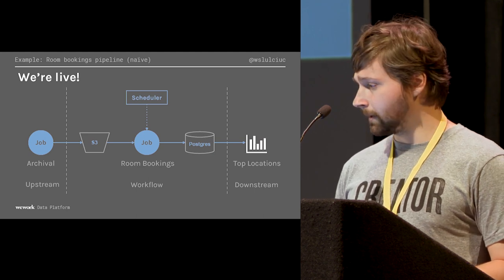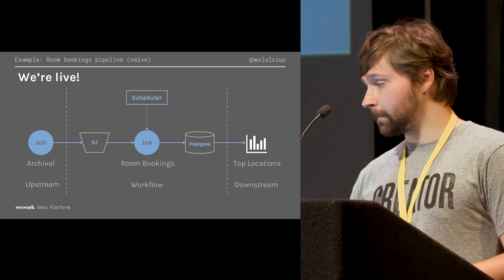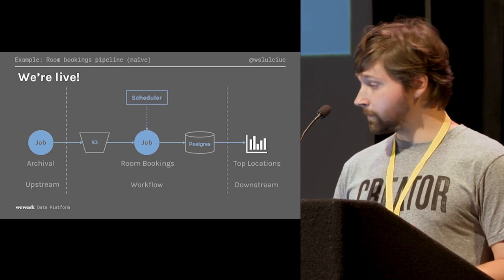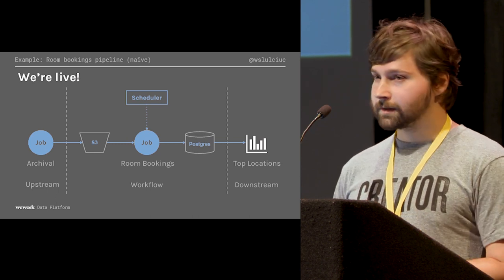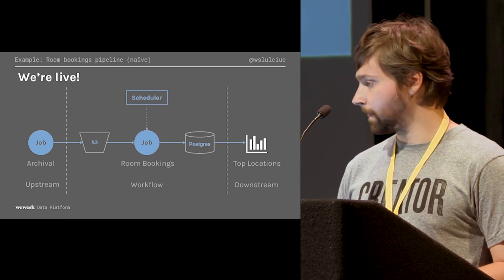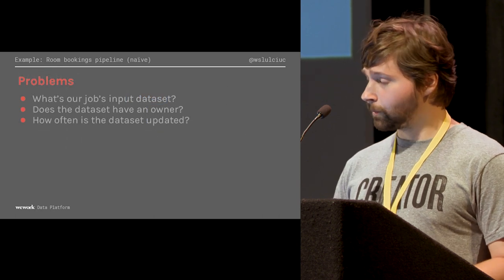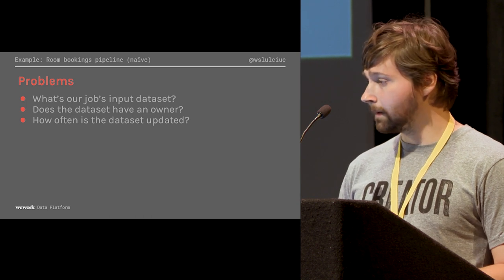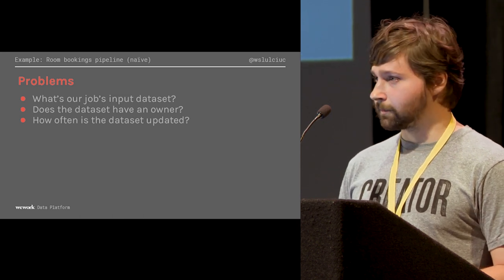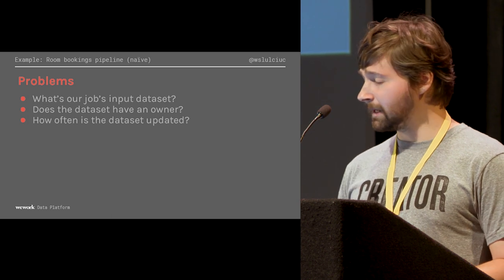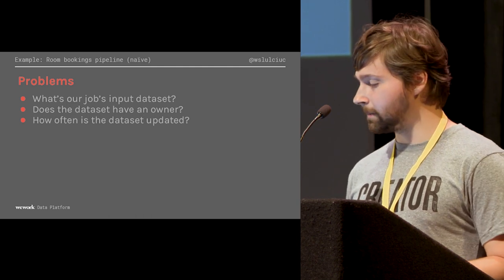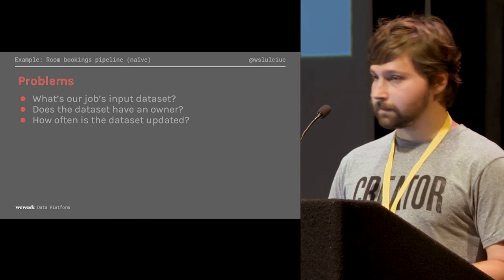We do have some interesting dependencies. One is the upstream dependency: there's some job owned by some team that's archiving room bookings into S3. The other is a downstream dependency: the dashboard has an upstream dependency on our workflow, so we have to make sure we're providing those data points in a timely manner. So we're keeping track of problems as we define our pipeline. One is: what's our job's input dataset? A lot of the time you either use Slack or send an uncomfortable email asking where room bookings can be found — a database, S3, or both?